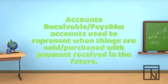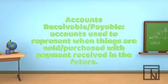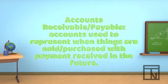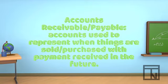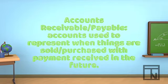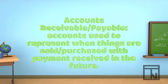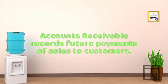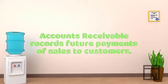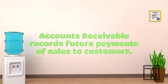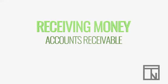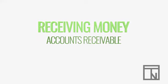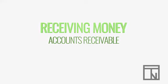Accounts Receivable and Accounts Payable are both accounts used to represent when things are purchased with the intent to pay the purchase sometime in the near future. The only difference between the accounts is which side of the transaction you are on. When customers purchase from you and promise to pay in the future, you would use Accounts Receivable to record that debt. We call it Accounts Receivable because you will be receiving money from your customer in the future.